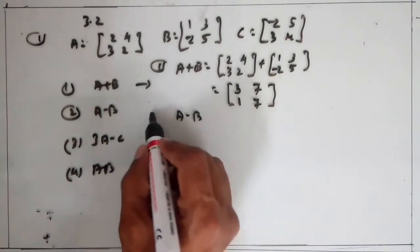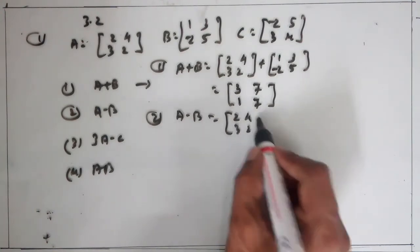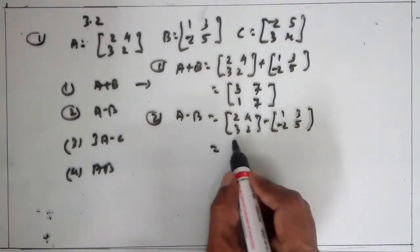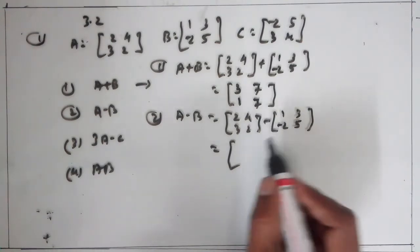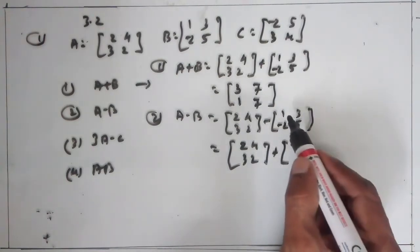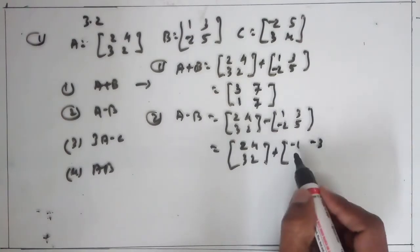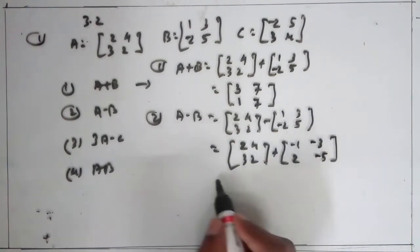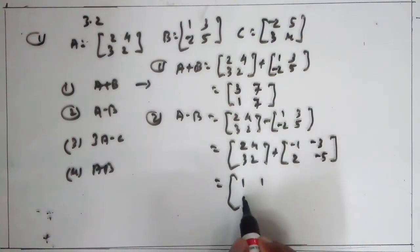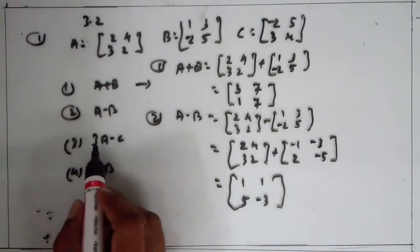Similarly, A minus B: A minus B equals A plus (minus B). We have A as [2, 4; 3, 2] minus B as [1, 3; -2, 5]. Change into addition form: [2, 4; 3, 2] plus — multiplying by minus 1 to each element of the second matrix — we get [-1, -3; 2, -5]. Now take addition: 2 minus 1 equals 1; 4 minus 3 equals 1; 3 plus 2 equals 5; 2 minus 5 equals minus 3. So A minus B equals [1, 1; 5, -3].